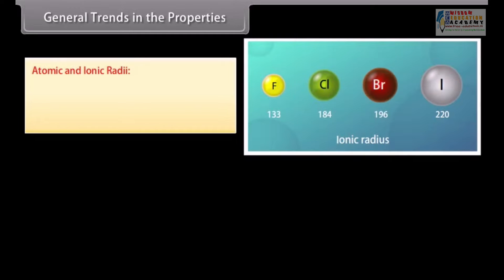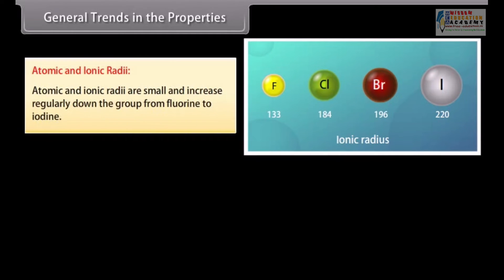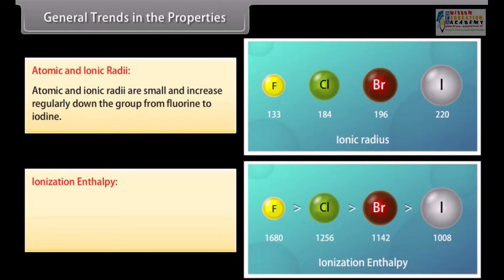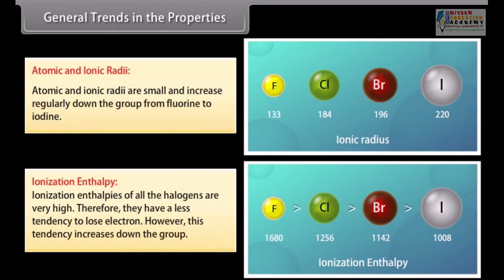Atomic and ionic radii are small and increase regularly down the group from fluorine to iodine, because new electronic shells are added. Ionization enthalpies of all halogens are very high; therefore, they have a lesser tendency to lose electrons. However, this tendency increases down the group because the distance of the valence shell from the nucleus increases.